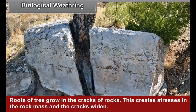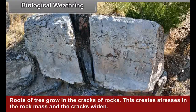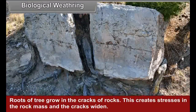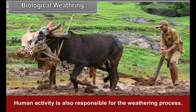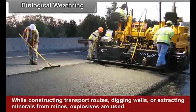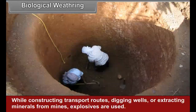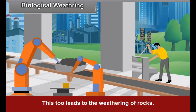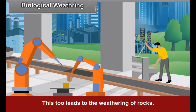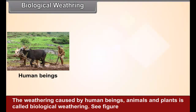Biological Weathering. Roots of trees grow in the cracks of rocks, creating stresses in the rock mass and widening the cracks. Different animals and insects dig the land to make holes. Human activity is also responsible for the weathering process — while constructing transport routes, digging wells, or extracting minerals from mines, explosives are used, which also leads to the weathering of rocks. The weathering caused by human beings, animals, and plants is called biological weathering.